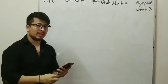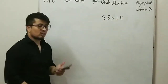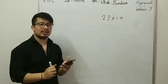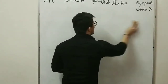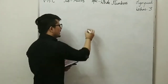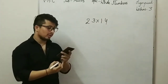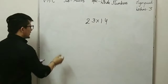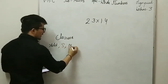Second question: if we multiply 23 and 1.4, what does the closure property of multiplication tell us in regard to the sets of whole numbers and integers? The closure property applies to four operations: addition, subtraction, multiplication, and division.